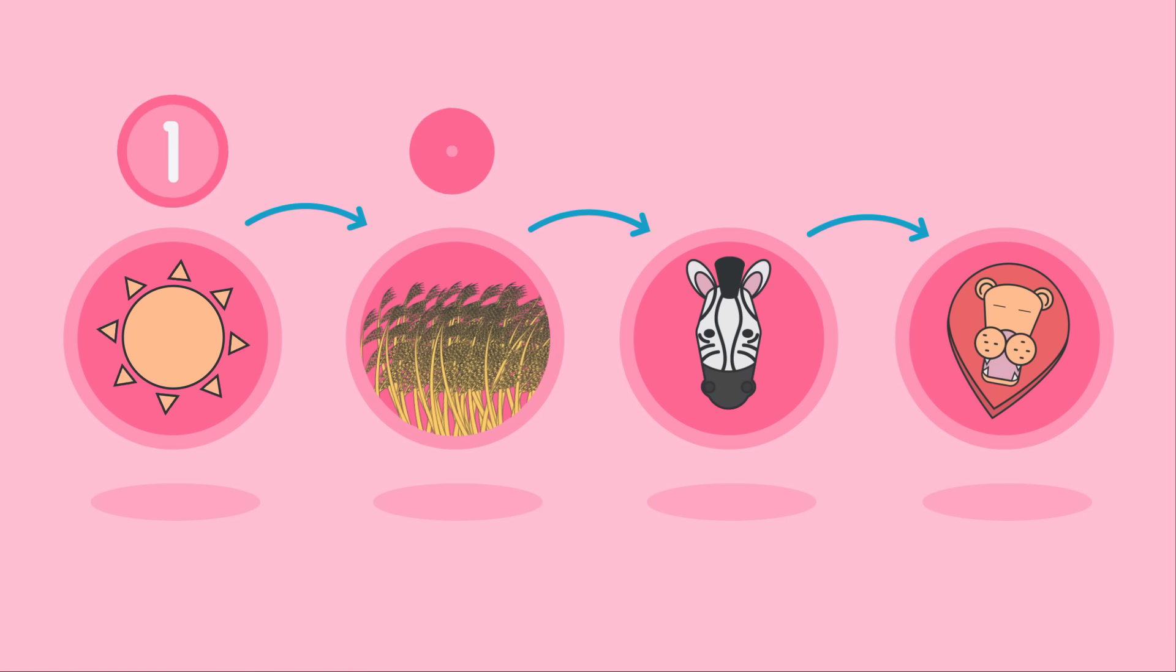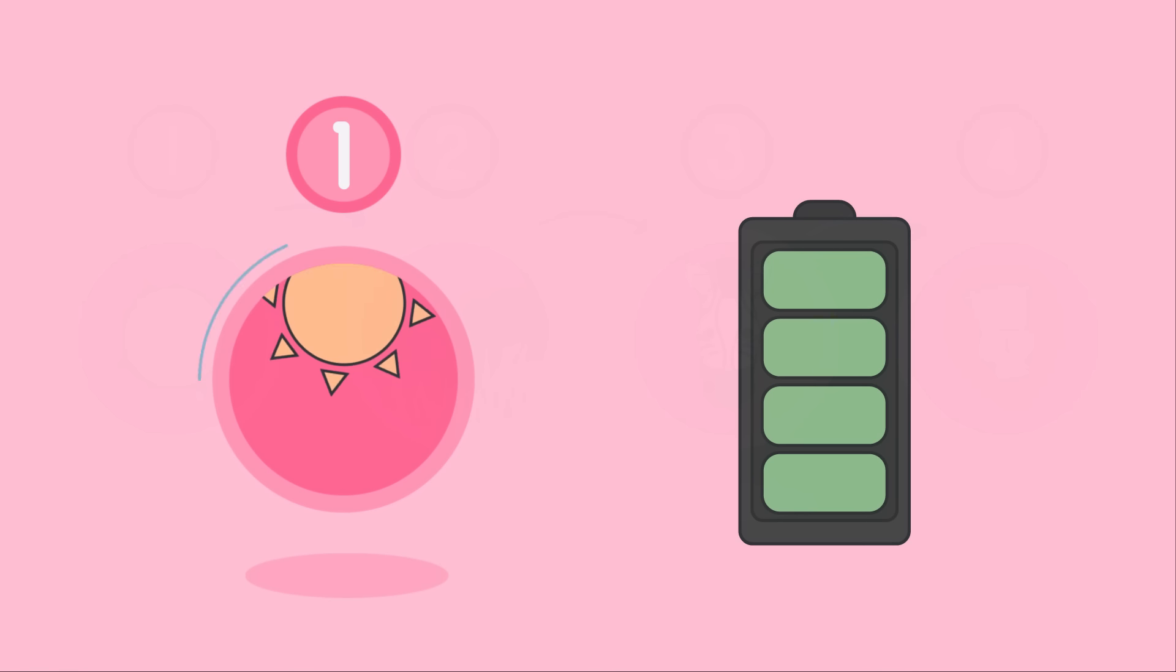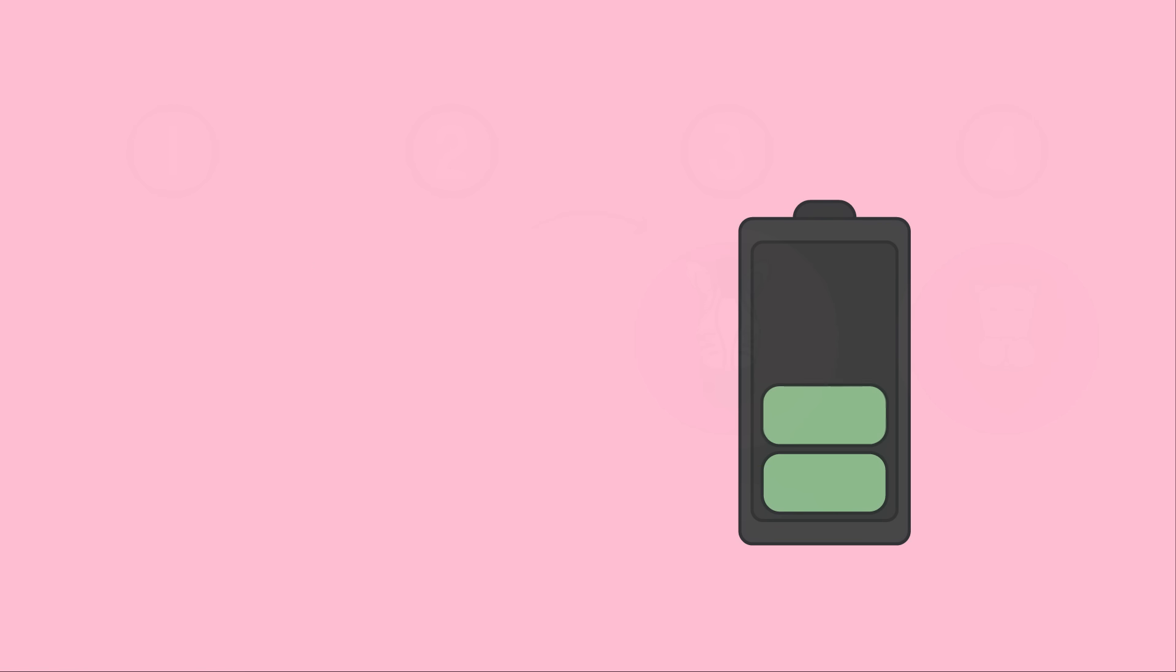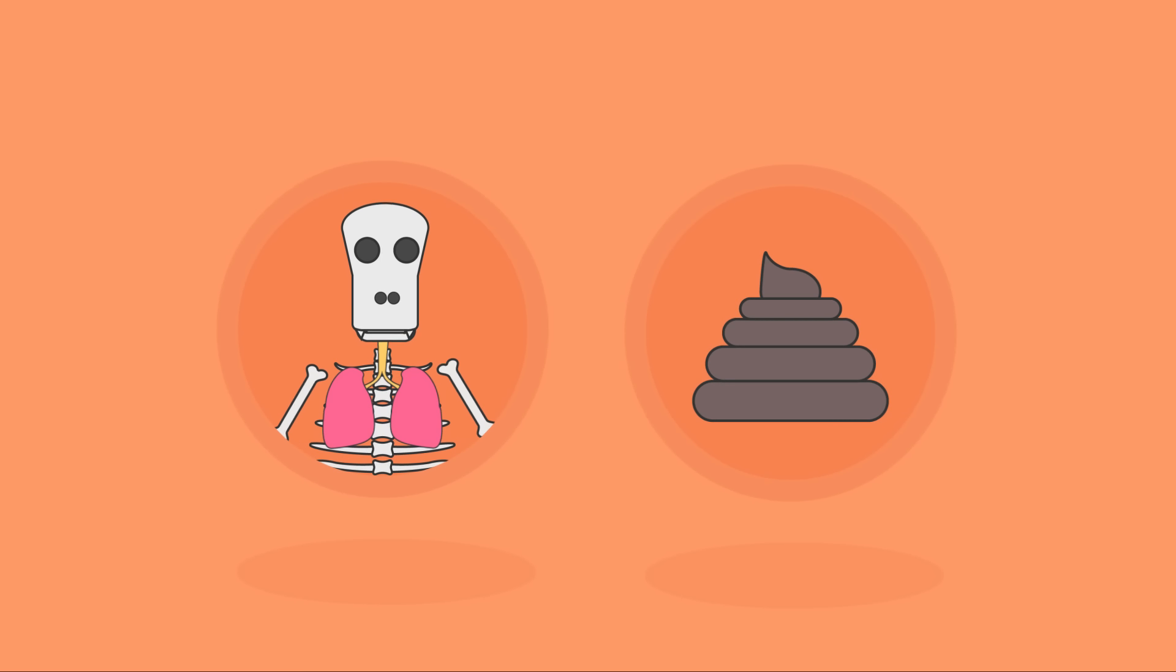Typically food chains involve around 4 steps. It is unusual for them to be longer because energy is lost between each step and so the energy available for the next organism decreases. It can be lost as heat during respiration or in waste material such as feces.